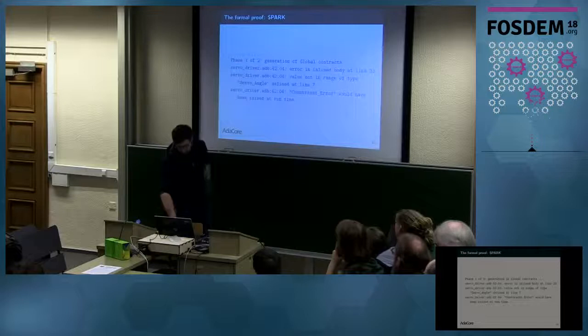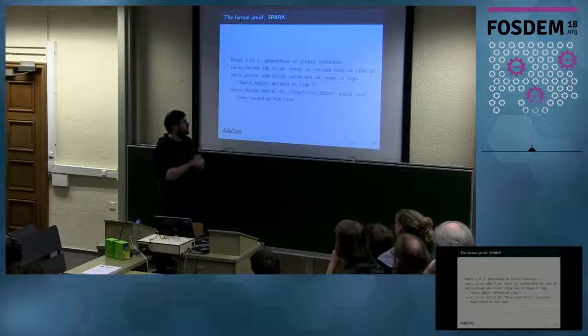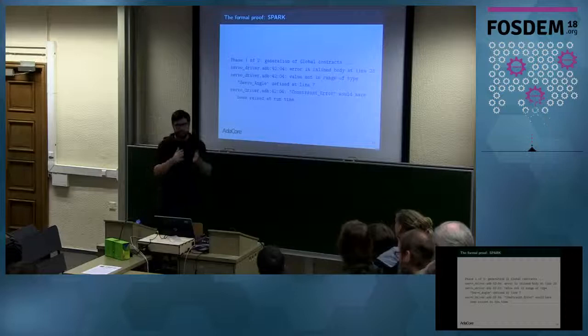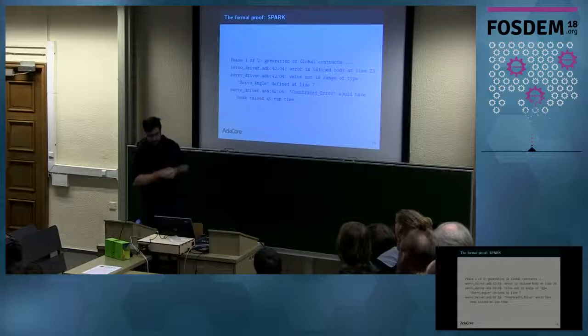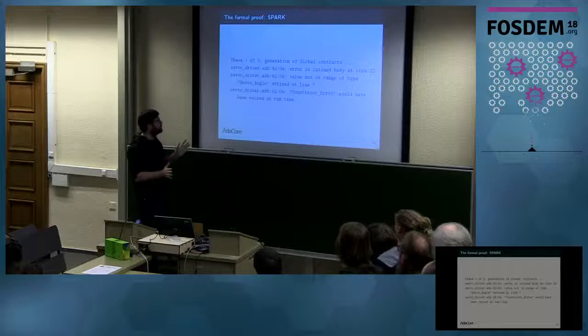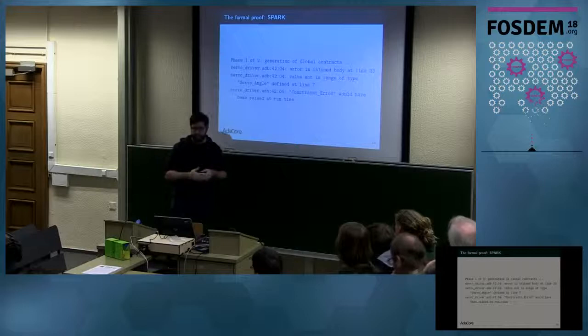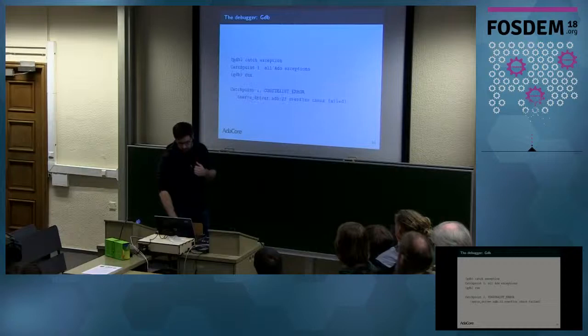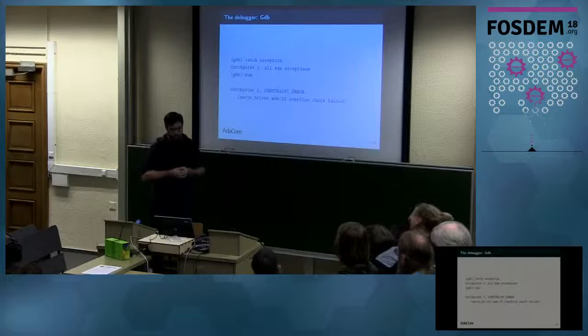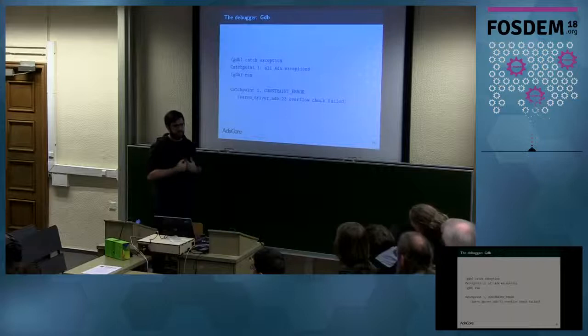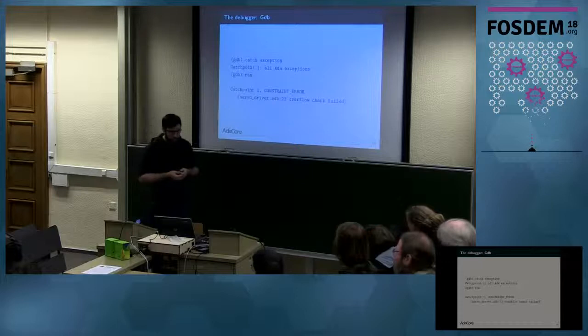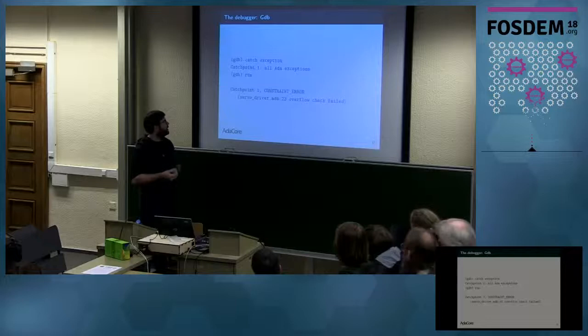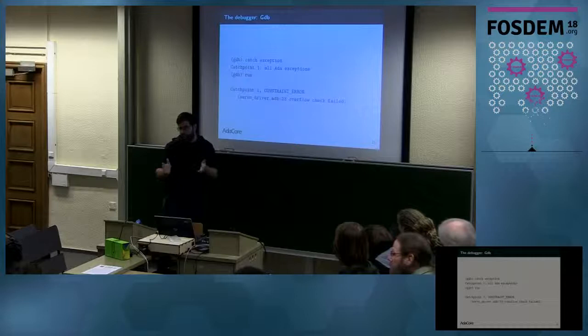The next tool is formal proof with SPARK — there will be a presentation this afternoon about SPARK. What this gives you is a mathematical proof that there is no error in your program. So if there is an error, the tools will tell you. Sometimes you don't have access to these tools, so some bugs may get through. The next step is to actually run your application under a debugger. When there is such an error detected in an Ada program, there will be an exception raised, and the exception will be caught — so you stop before the error and protect your hardware.